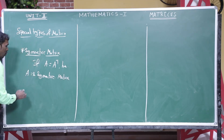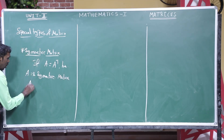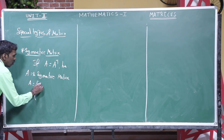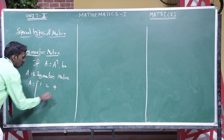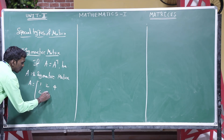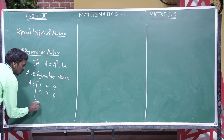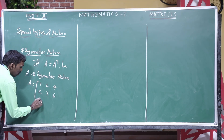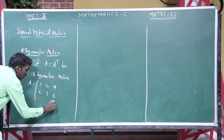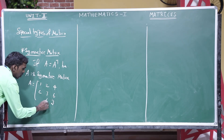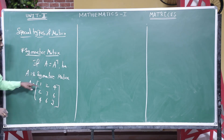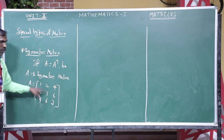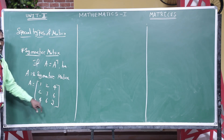I can give one example. I am taking the matrix: 1, 2, 4 in the first row; 2, 7, 6 in the second row; and 4, 6, 3 in the third row. This is a 3×3 matrix with three rows and three columns.